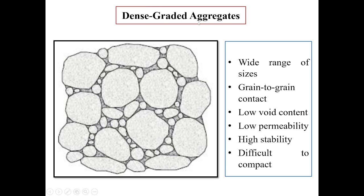Next is dense-graded aggregates. The name indicates there will be wide range of sizes. That means there will be aggregates of almost all the sizes and therefore there will be good grain-to-grain contact. The void content will be low, which leads to low permeability. The stability is high, but these are again difficult to compact.